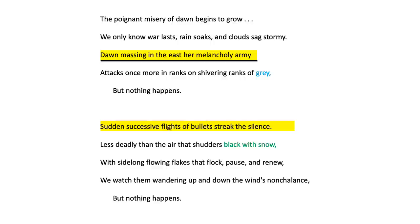In line 16, the first line of stanza four, we have sibilance through 'sudden successive flights of bullets streak the silence.' This mimics the whistling sound of bullets flying through a cold and silent night. Line 17 presents us with a particularly strange image of the air being 'black with snow.' This is odd, because snow is normally white, and as such associated with purity. Here, however, it is black, which often symbolises evil or death. This shows how the snow and the cold have become the true enemy.